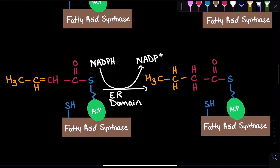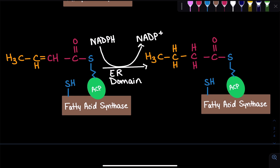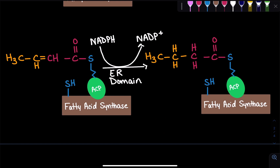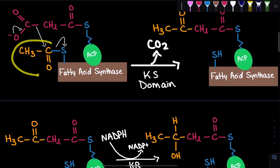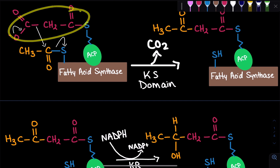Now there's a problem. In vertebrates, we have FAS-1, which can only synthesize 16-carbon fatty acids. After the first round, we only have four carbon units — we still need to add 12 more carbons, so we need to add 6 more malonyls. Importantly, only in the first step do we see the acetyl group; from that point forward, we're only going to be adding malonyls.